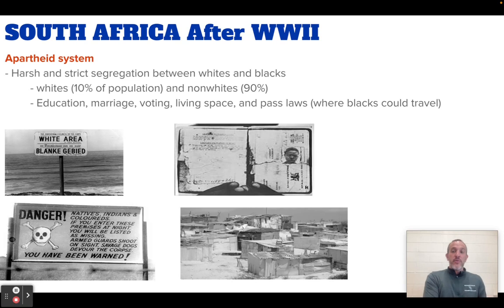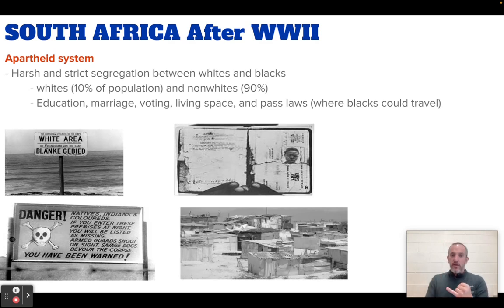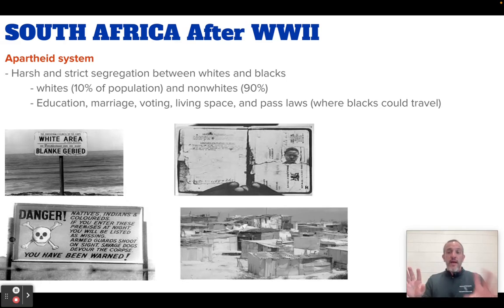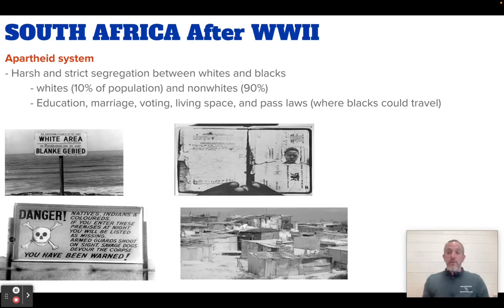White people made up 10% of the population; black people made up 90%. They are going to segregate in terms of education — elementary, middle, high school, college. Segregation in terms of marriage — no intermarriage allowed between white and black people. In terms of voting, white people can vote, black people cannot. Living space — you have to stay in your segregated area. And the pass law, which only black people had to follow, required you to carry a pass book and get permission from the local government to leave your town.